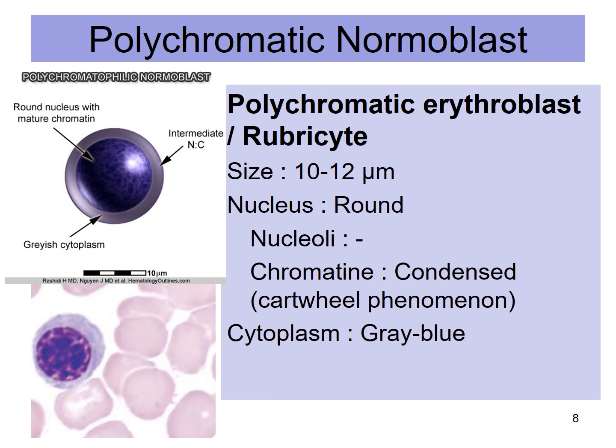The polychromatophilic normoblast is also called rubricyte. It is 10 to 12 micrometers in size with a rounded nucleus. It has no nucleoli. However, it has condensed chromatin with the pathognomonic cartwheel phenomenon, and grey-brownish cytoplasm.